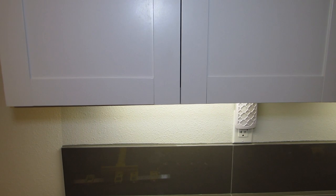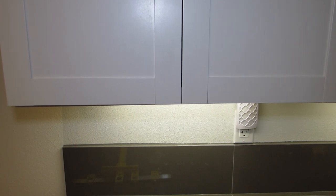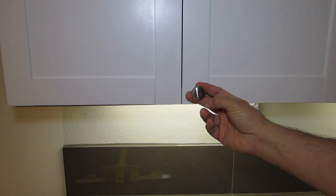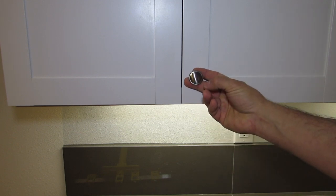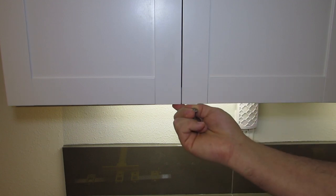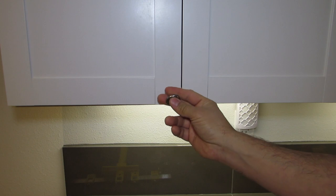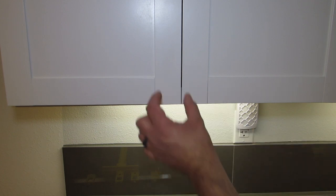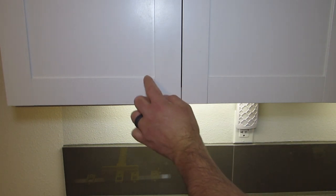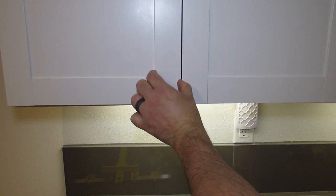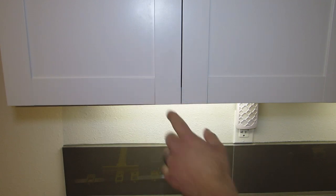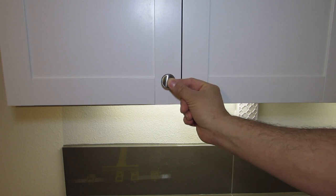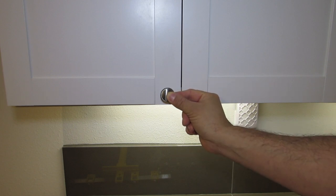Whenever we begin the installation of any cabinet hardware like knobs or handles, we want to visualize where it's going to sit. And a few factors for that would be, would you prefer it to be in the center. Some people like it a little higher but centered in between this line here, this piece and the shaker door. So some would like it up here, some would like it down here.